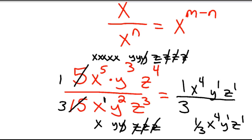The y's cancel: two y's cancel from numerator and denominator, and then your x's cancel — four of the five x's cancel — so you're left with x to the 4th.